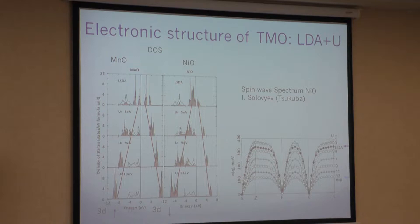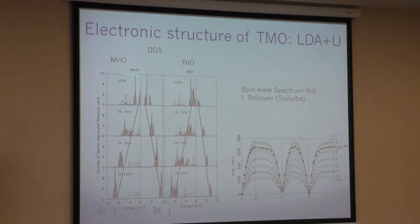Pictorially, what is the mechanism? Let's think about the simplest static LDA+U calculation. We start from full LDA, and for correlated electrons, we put in the Hubbard U operator. If you look at the famous antiferromagnetic insulator like nickel oxide or manganese oxide, and you just do DFT with local spin density approximation, the system becomes antiferromagnetic, and you even get a gap.